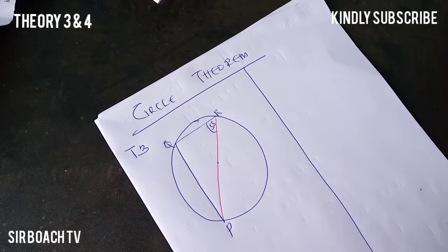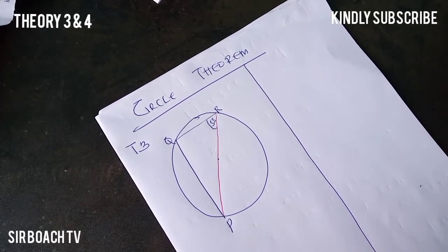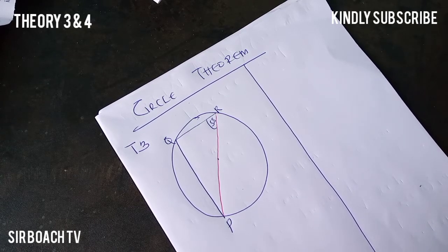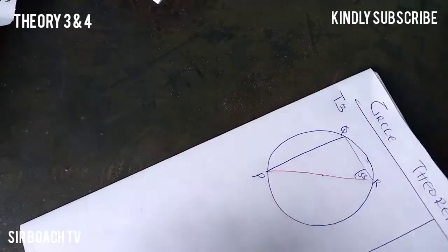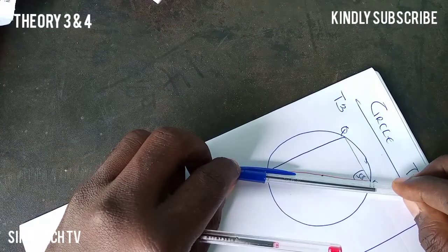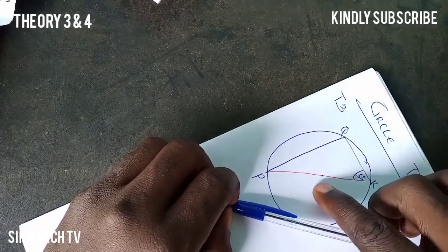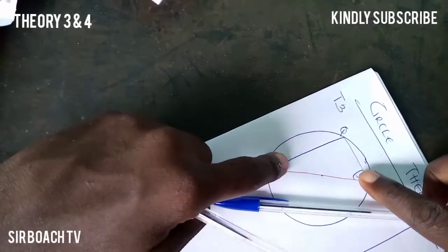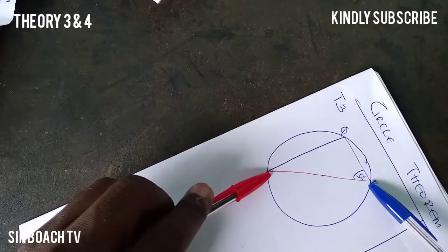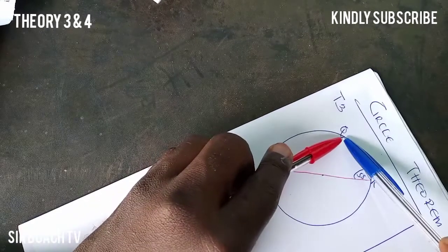This is the Circle Theorem continuation. Theorem 3 says that when a diameter sustains an angle to the circumference of the circle, that angle is 90 degrees. We can see this is a diameter — it's a line through the center, not just a chord. So we call this a diameter.